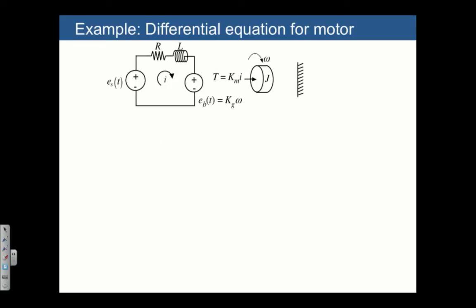Let's derive the differential equation for the motor. We'll start with the electrical side, and we can use Kirchhoff's voltage law to find the loop current through the system. The voltage drops are -ES + R + LS times I + EB equals zero, which we can solve for I, which is just going to be equal to ES minus EB divided by R plus LS.